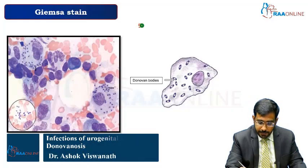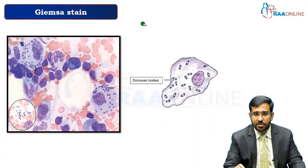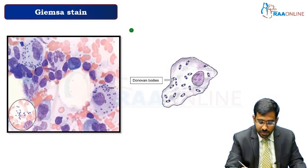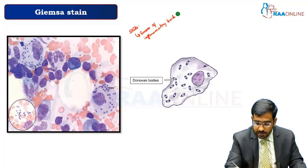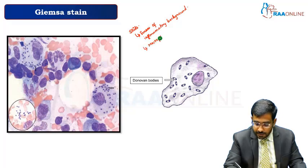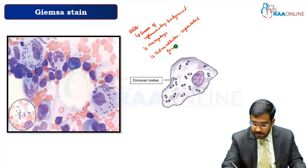This is the Giemsa stained smear. With this we are going to see the microscopic findings. Here you will be able to see a slide which is having the smear of inflammatory background, and we are able to see the macrophage and we are able to see the intracellular capsulated gram-negative and pleomorphic organisms.